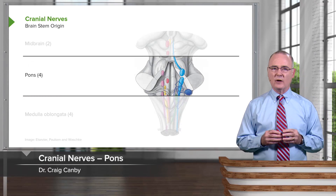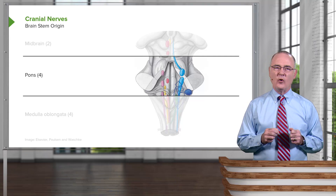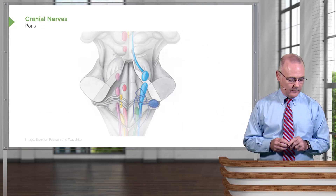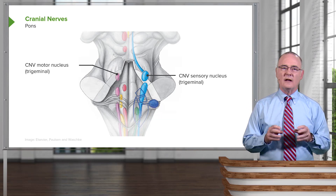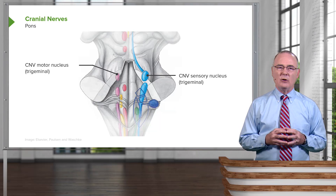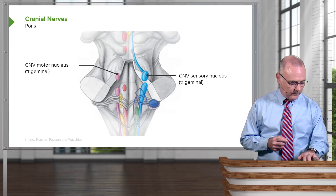This brings us to the level of the pons as we work our way inferiorly. Remember that the pons has four cranial nerve nuclei. The first nucleus is actually a paired situation — the trigeminal cranial nerve nuclei. One is the motor nucleus of the trigeminal nerve, cranial nerve five motor nucleus, and over here in blue we see the sensory nucleus for cranial nerve five.